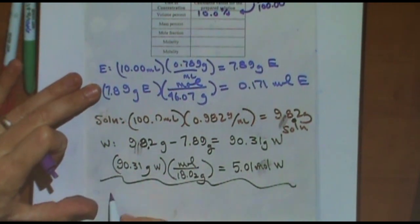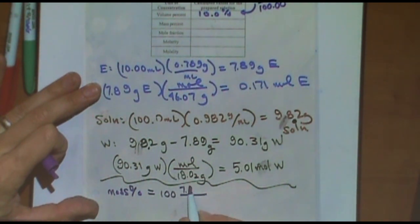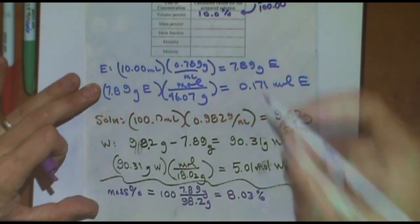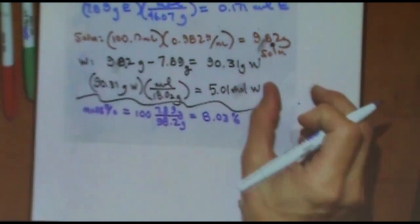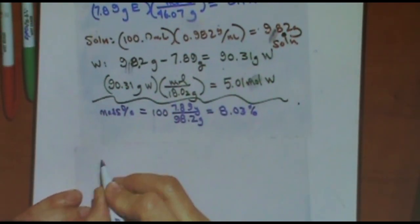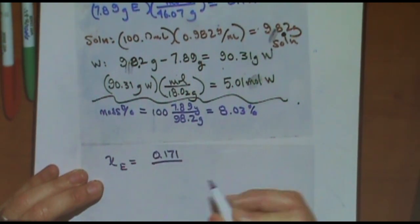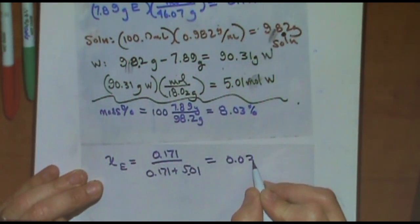Mass percent would be times 100 to change to percent: the mass of my solute, 7.89, divided by my total mass, 98.2 grams. And I got 8.03 percent. Mole fraction — I'll do that on a different page. Mole fraction of the ethanol is the moles of ethanol, 0.171, divided by the total moles, 0.171 plus 5.01. And I got 0.0330. No unit for the mole fraction.